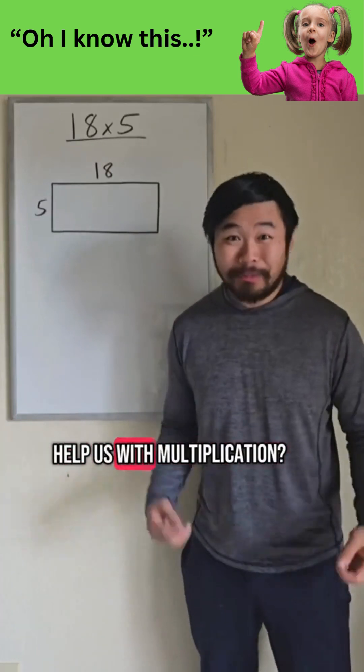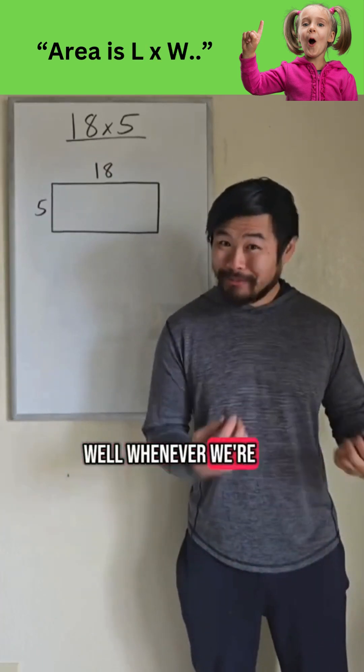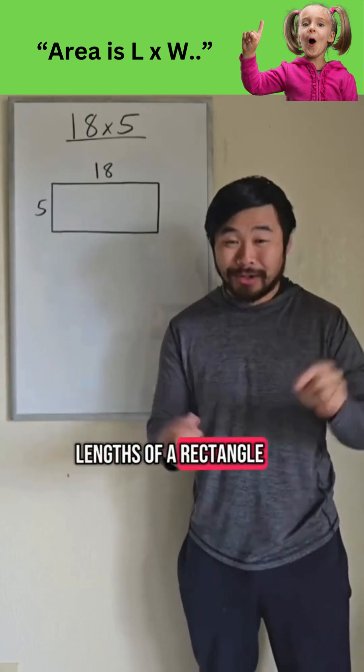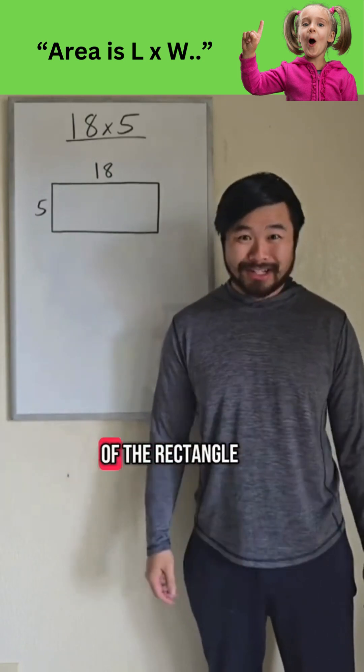How can rectangles help us with multiplication? Well, whenever we're multiplying two numbers together, we can think of those numbers as the side lengths of a rectangle, and the product is the area of the rectangle.